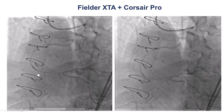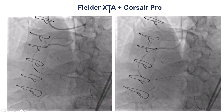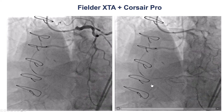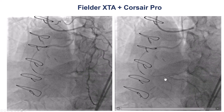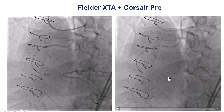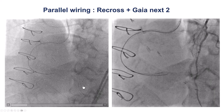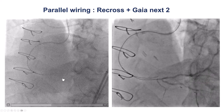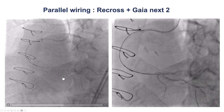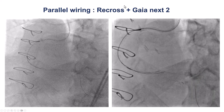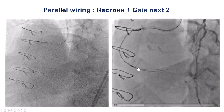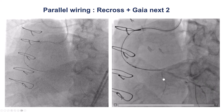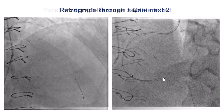We tried antegrade first. A Fielder XTA through a Corsair Pro seemed to go into the extraplaque space. We left it in place and then tried to advance a Gaia NX2 in a parallel wire fashion, but unfortunately that wire was also outside the vessel architecture.